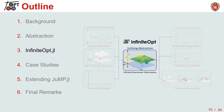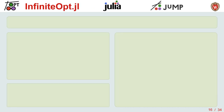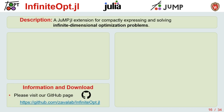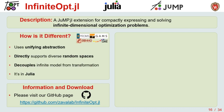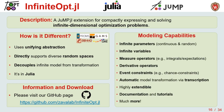Now let's talk about how we implement this abstraction in InfiniteOpt, which is a JuMP extension for tackling infinite dimensional optimization problems. What makes it different from other packages? It implements the unifying abstraction we've just described. It directly incorporates random spaces as provided by Distributions.jl. It decouples the infinite model from the transformation methods used to solve it. And of course, it's in Julia. It implements a range and wealth of capabilities, as we will go over in the coming slides.